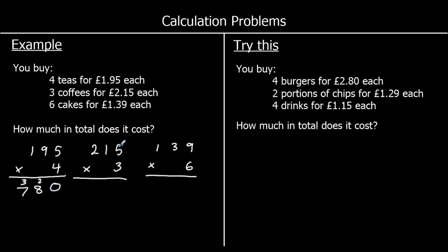The next one: three times five is 15, so five in the ones carry one over. Three times one is three, plus the one is four. And three twos are six. So that's 645p, or six pounds forty-five.